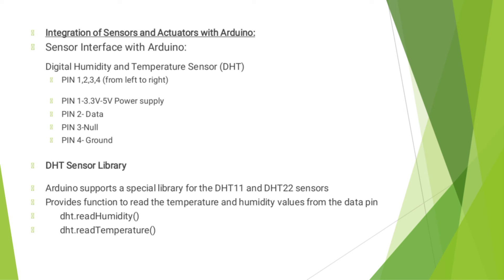The DHT sensor has pins 1 through 4 from left to right. Pin 1 provides 3V to 5V power supply. Pin 2 is represented as data. Pin 3 is represented as null value. Pin 4 is represented as ground.